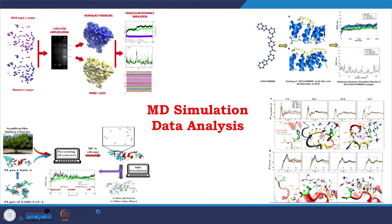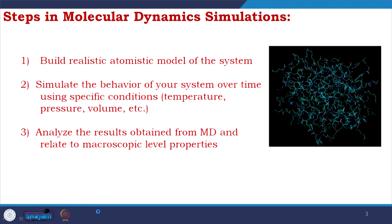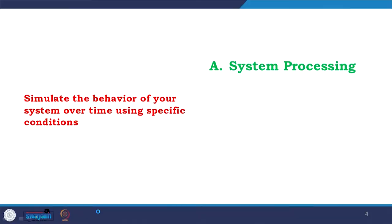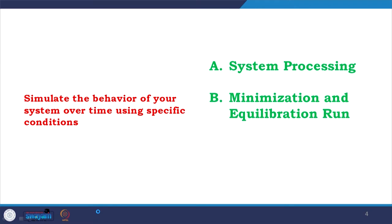MD simulation data analysis — I have discussed the steps in molecular dynamic simulation multiple times. We built a realistic atomistic model of the system, picked up the PDB, cleaned and repaired it. The next step was to simulate. The simulation process is divided into three steps: system processing, then minimization and equilibration run, and then the final production run.